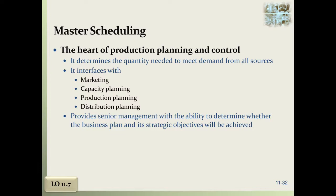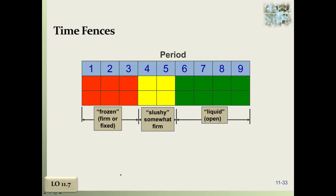You can look at marketing, capacity planning, production, and distribution planning. This also provides senior management with the ability to determine whether the business plan and its objectives will be achieved. It's still kind of at a high level when you're looking at this.